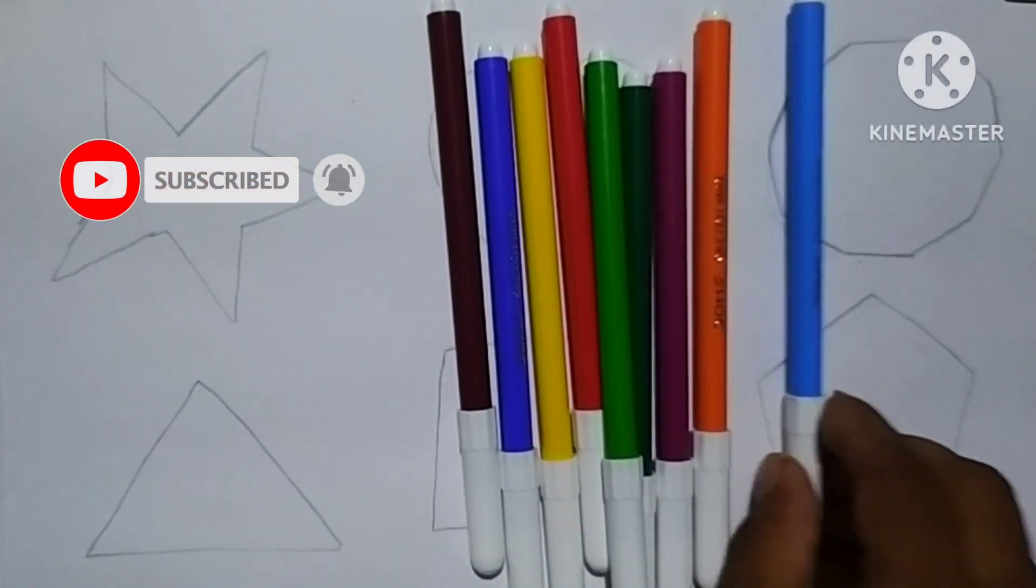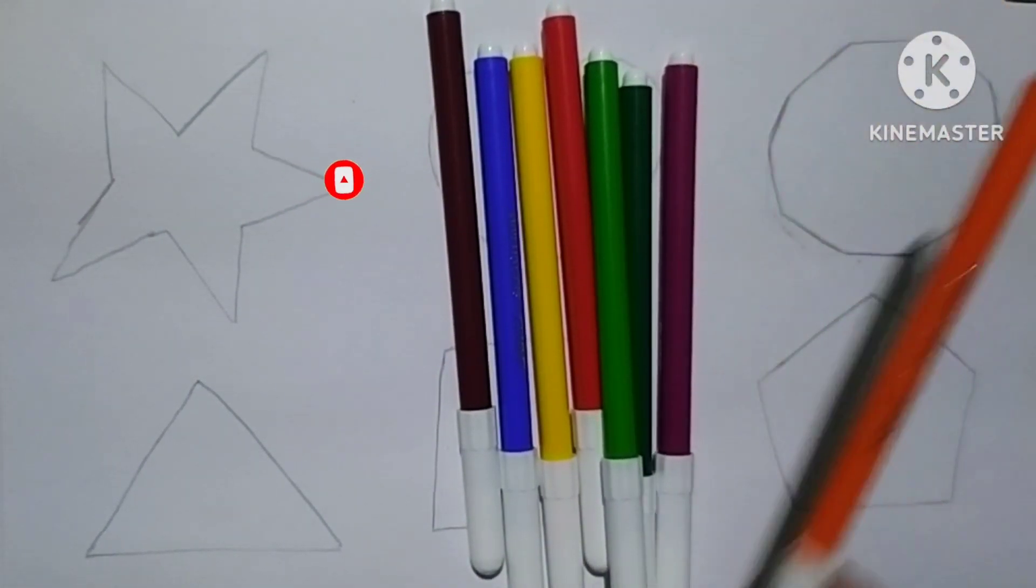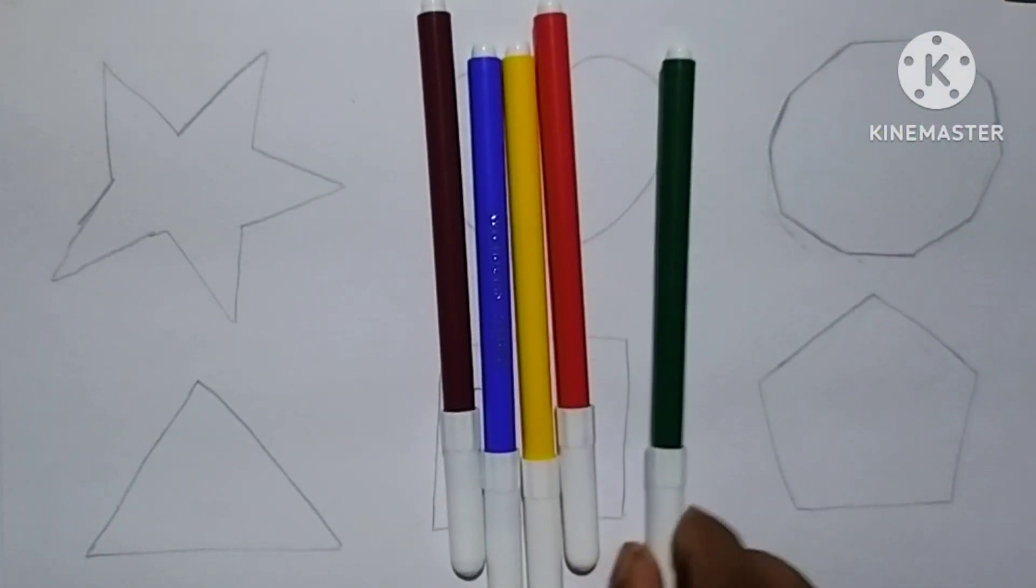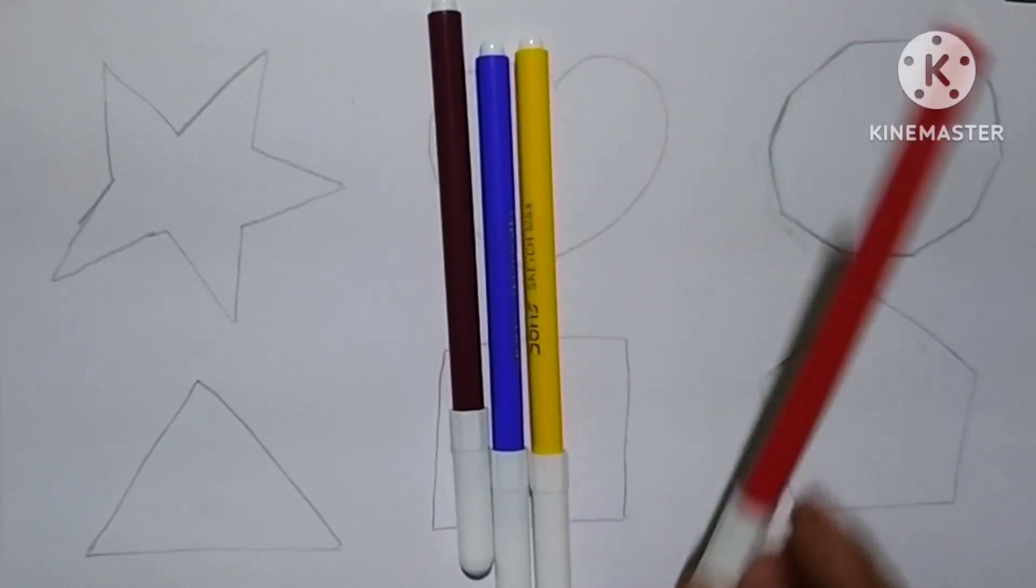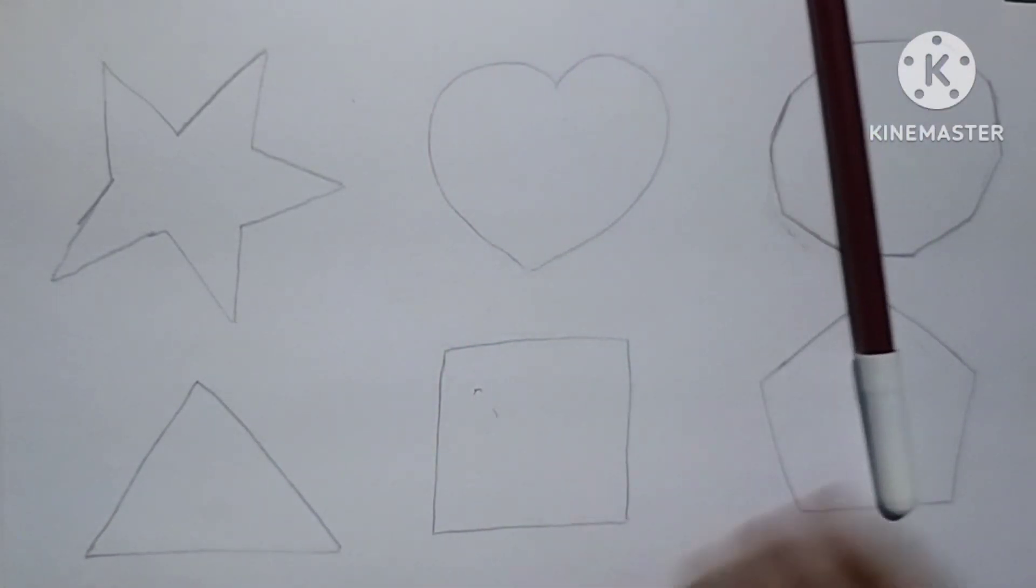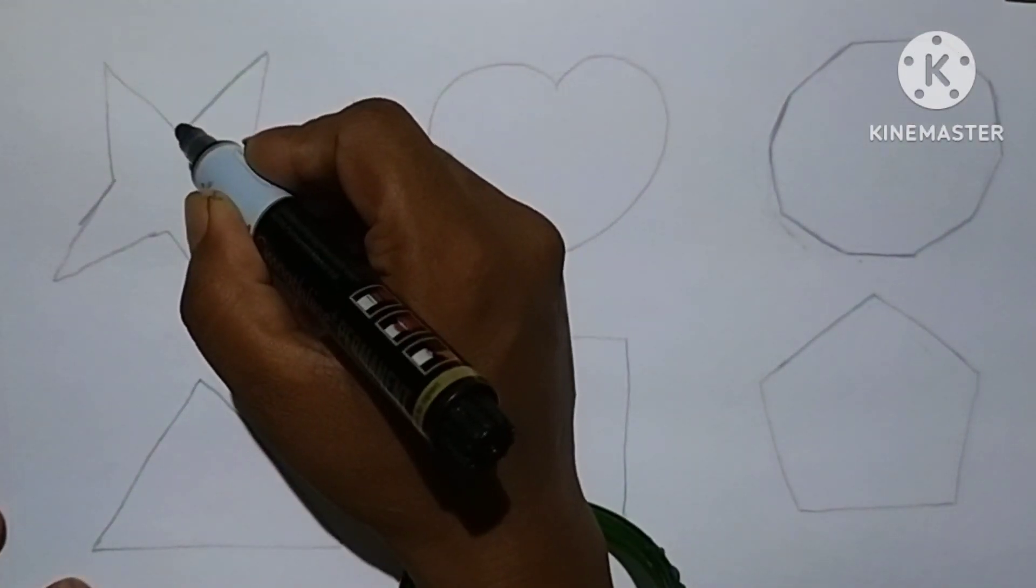Purple color, sky blue color, orange color, pink color, light green color, deep green color, red color, yellow color, blue color, brown color. Let's draw some 2D shapes.